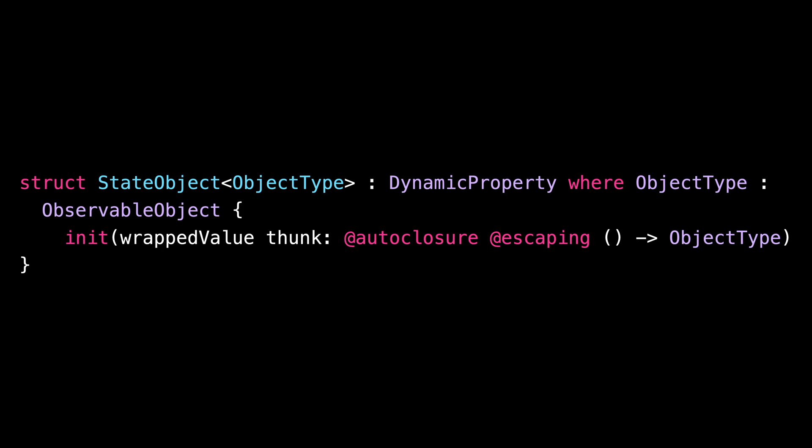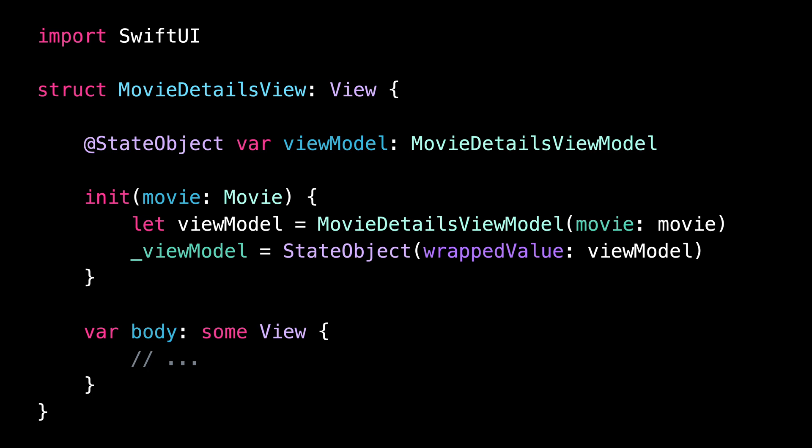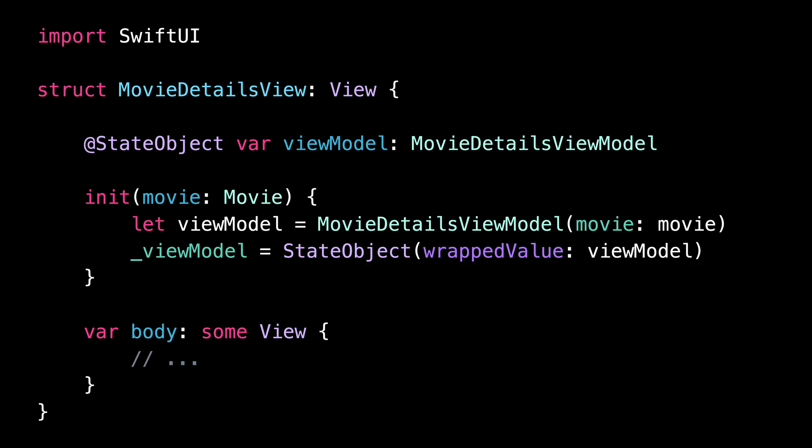This is really important because it guarantees that our view model won't be recreated every time the view gets updated. Now, let's go back to our call site. Since we're only passing our local variable to the initializer of StateObject, the StateObject wrapper won't be able to manage the code that instantiates the view model itself. As a result, every time the initializer of the view is executed, a new view model will be created. But since the StateObject initializer executes the closure only once during the entire lifetime of the view, all these extra view models will never be stored inside the StateObject and will instead be immediately released from memory.